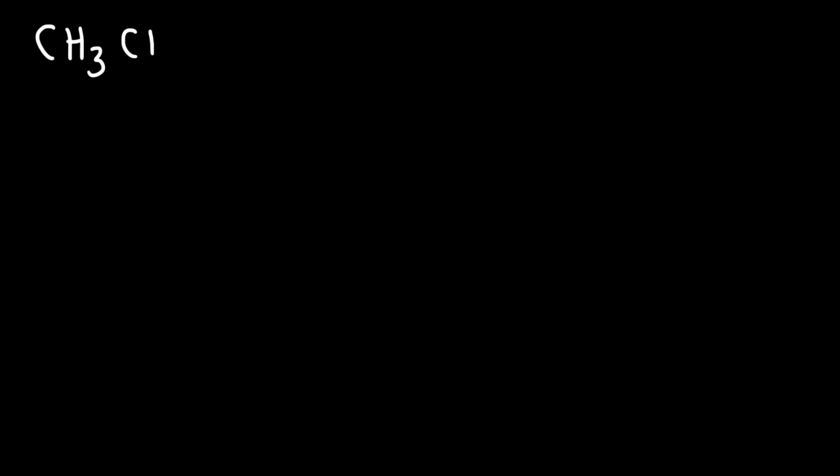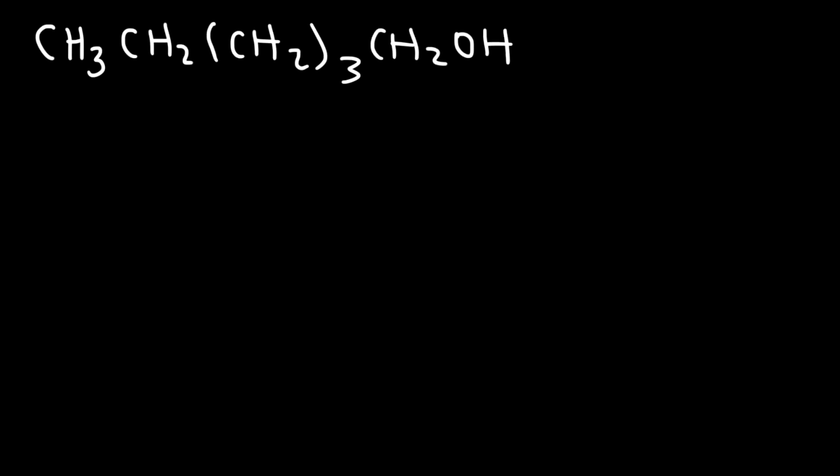Consider this structure: CH3, CH2, CH2 times 3, CH2OH. Go ahead and draw the Kekulé structure of this particular condensed structure. A Kekulé structure is like a Lewis structure, with the exception that the lone pairs are usually omitted. So we're not going to worry about drawing the lone pairs on oxygen. Go ahead and draw the Kekulé structure for this molecule.